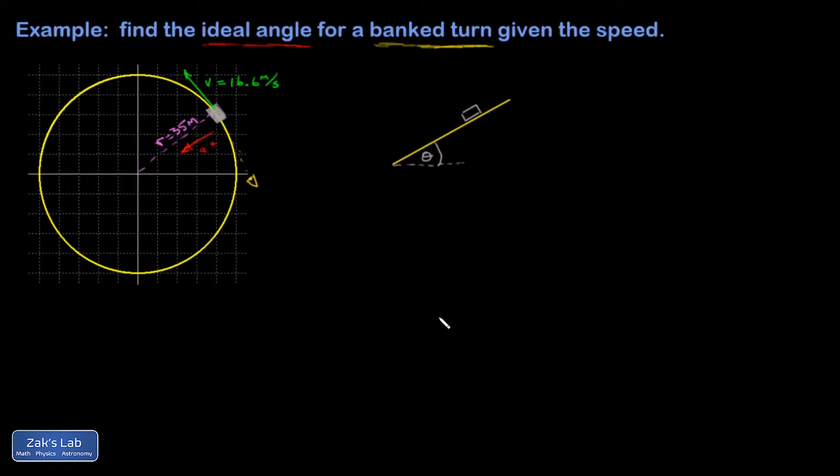That means the angle that makes it so no friction is necessary to go around the turn. So that might seem a little weird if you've just seen the flat turn problem. It requires static friction on the tires in order to push the car to the center of curvature and cause that centripetal acceleration.